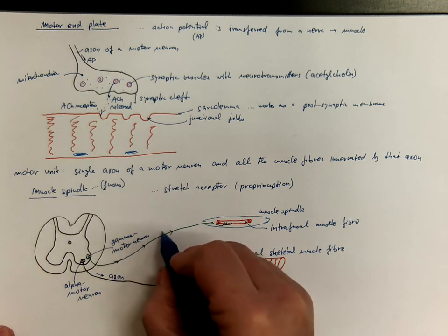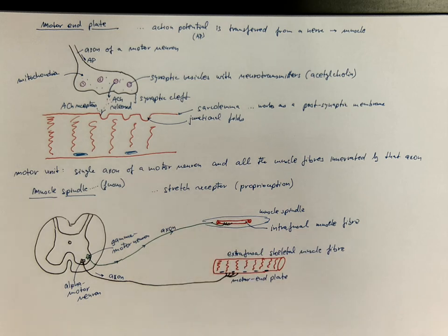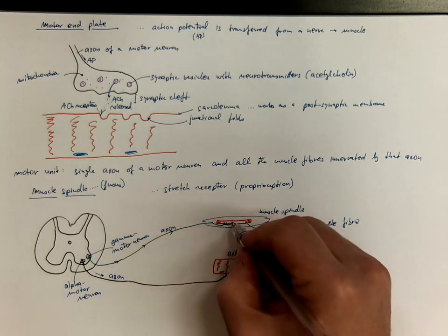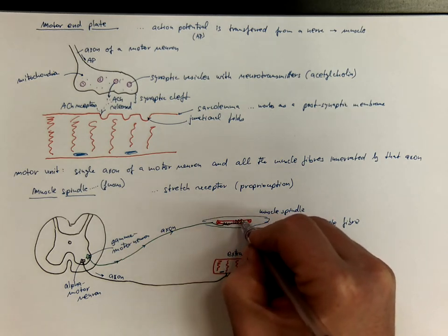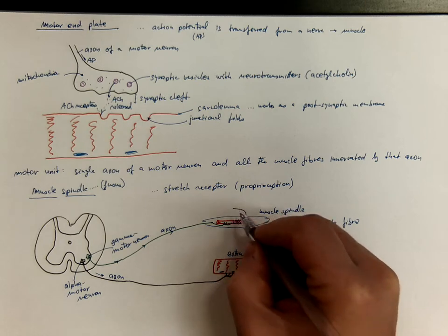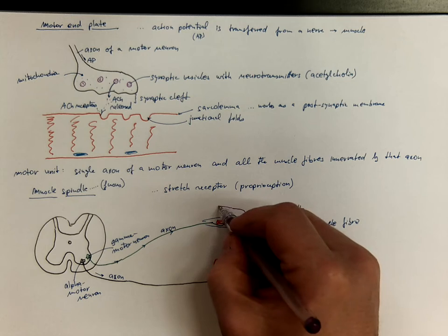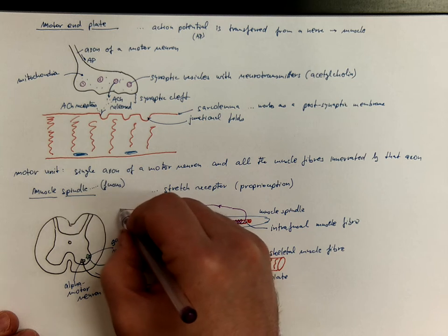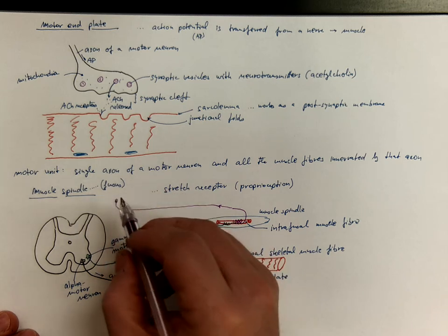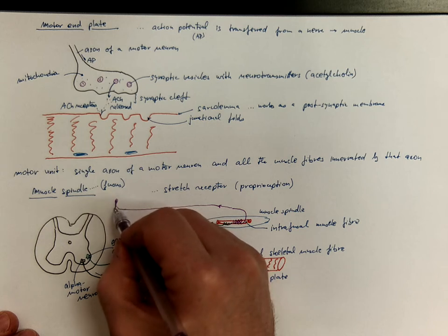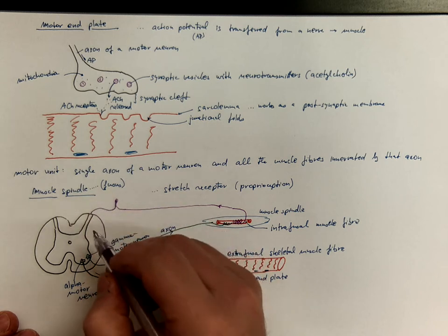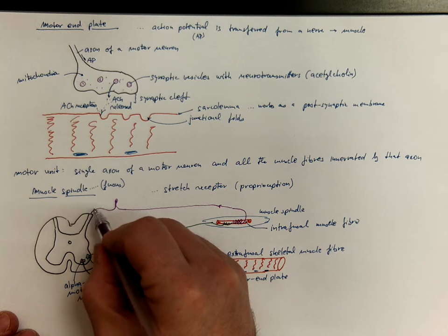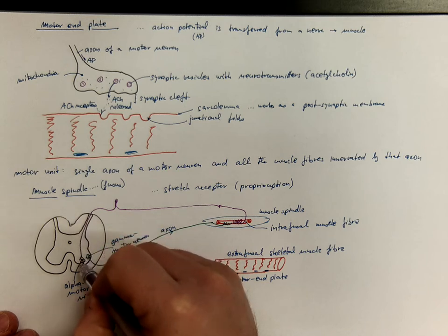This is its axon. And moreover, the intrafusal muscle fibers are wrapped around by sensory nerve fibers that carry the information about the contraction back into the central nervous system. And these are sensitive processes of neurons sitting in the spinal ganglia. And the axons of these neurons are entering the spinal cord via the dorsal roots into the dorsal horns, and they can synapse on various motor neurons.